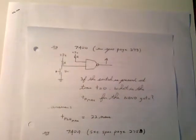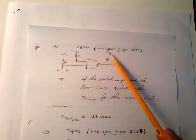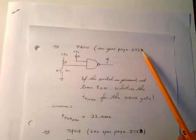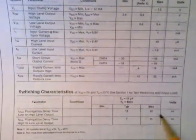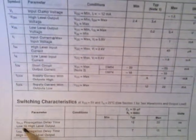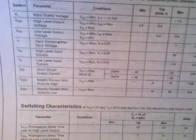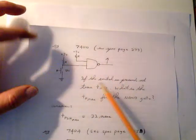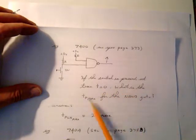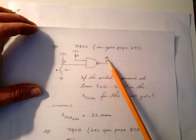Let's take a look at page 81 in your lecture notes. We have a 7400 — look at page 273, which is the quad two-input NAND gate package. Looking at the propagation times in the spec sheet: T propagation low-to-high is 22 nanoseconds, and propagation time high-to-low is 15 nanoseconds. Notice they're not equal. So if the switch is pressed at time T equals zero, what is the maximum propagation time for that NAND gate? How much time does it take that output to react?